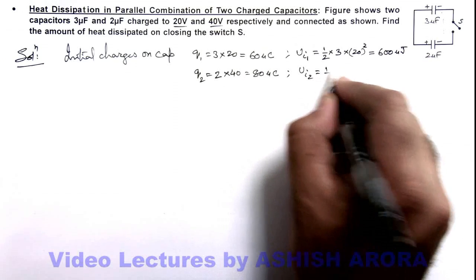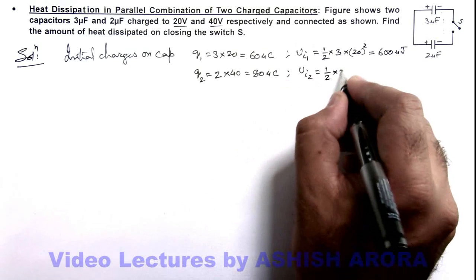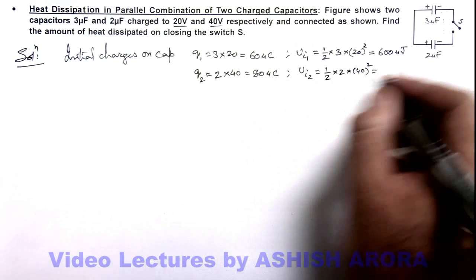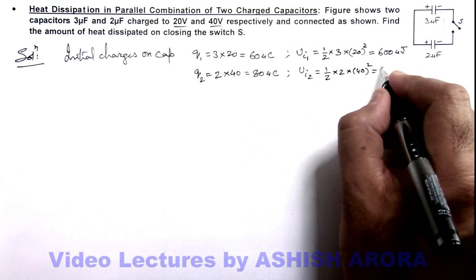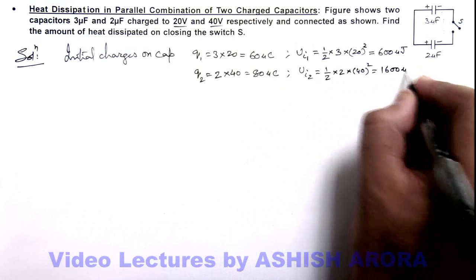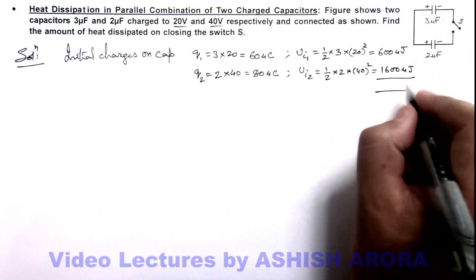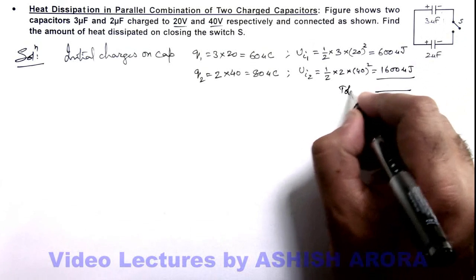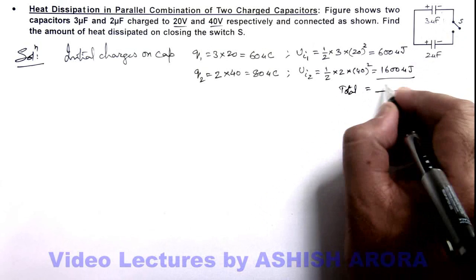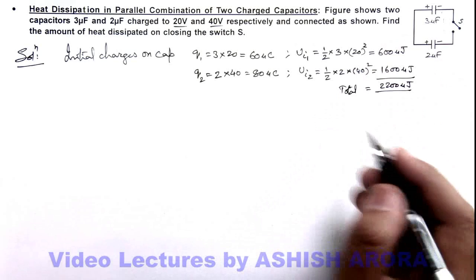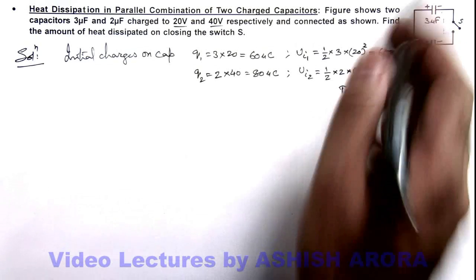Similarly, for the second capacitor, it is ½ × 2 × 40², which equals 1600 microjoules. The initial energy in the two capacitors in total, summing these up, gives us total energy of 2200 microjoules. This is the total energy stored in these capacitors before closing the switch.